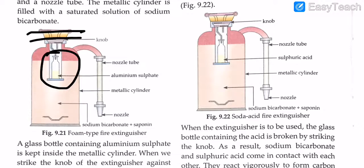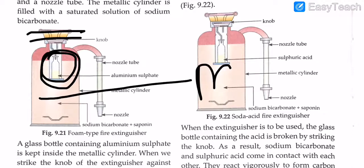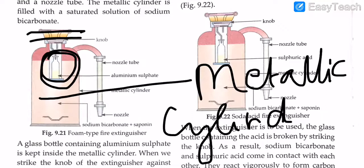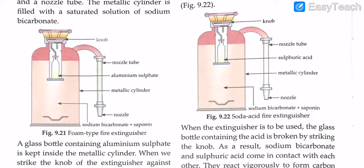The glass bottle breaks and aluminium sulphate comes in contact with sodium bicarbonate. As you can see, whoever designed this is very smart — they have separated the aluminium sulphate in the glass bottle from the sodium bicarbonate which is present in the metallic cylinder. So they are completely separated. Whenever a fire does come, the knob is broken. The glass bottle breaks, and aluminium sulphate comes in contact with sodium bicarbonate. Imagine the chemical reaction that may take place along with that.